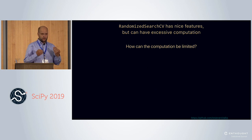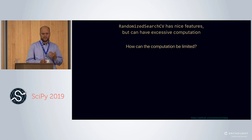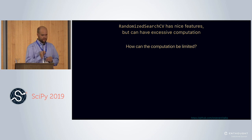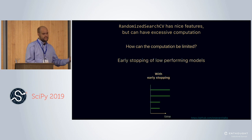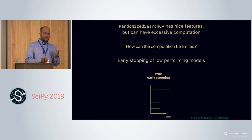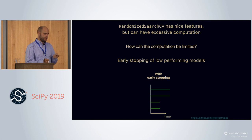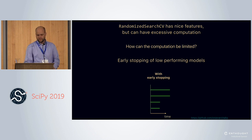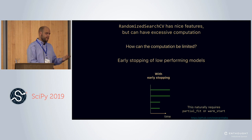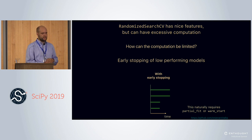My focus is to limit computation for hyperparameter selection. Scikit-learn's RandomizedSearchCV has a lot of nice features but it doesn't limit computation. Early stopping is the easiest method to do that. We stop half of the models halfway through, saving 25% of the computation. With high probability, those bottom two models are not the highest performing — so naturally this requires some partial_fit implementation or warm starts, some way to continue training.